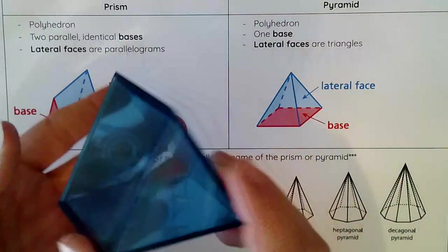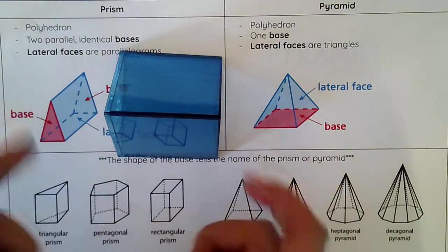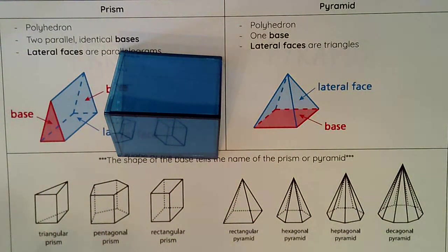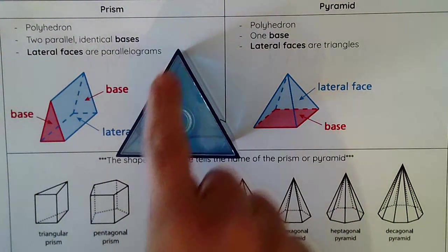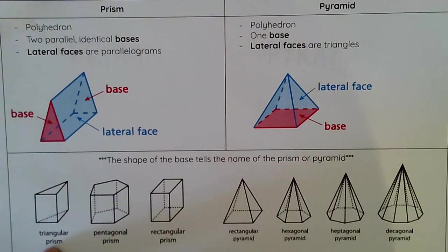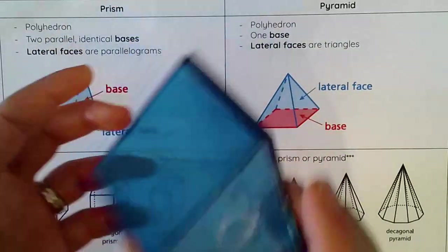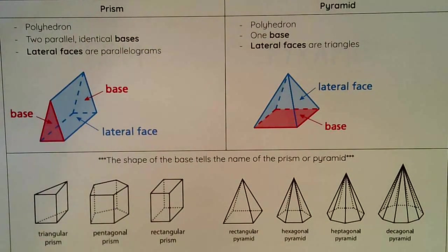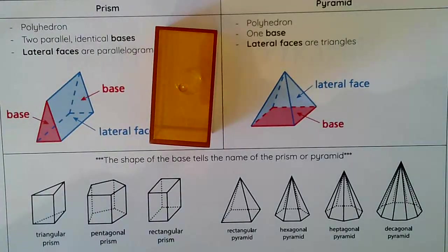We name our prisms and pyramids based on the shape of the base. Looking at this 3D shape, it is a prism because it has two bases. If I look at the base of this prism, I see that it is a triangle — therefore this figure is a triangular prism. The bases are triangular and there are two of them.